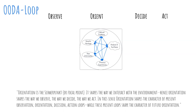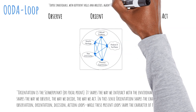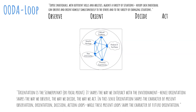It is also essential to keep in mind that it is imperative for success to foster collaboration, different points of views, and different expertises. As Boyd states, quote: expose individuals, with different skills and abilities, against a variety of situations, so that each individual can observe and orient himself simultaneously to the others and to the variety of changing situations. We orient ourselves, according to Boyd, with an interplay of our cultural traditions, our genetic heritage, our previous experience, and the new information that we receive, with a process of analyzing and synthesizing to come to a new mental image of the world. This is not a sequential or ordered process — it is a continuous interaction between these five elements, also continuously influenced by external factors like new information, interaction and discussion with others, and other feedback loops.